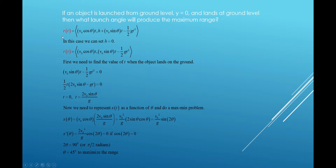Here's the — neglecting air resistance — calculus positioning function, a vector value function. Here's the x component, here's the y component. And in the case where h is zero, where you're launching from ground level h equal to zero, and then you're going to land at zero for the y value, you do maximize the range with a 45-degree launch angle.